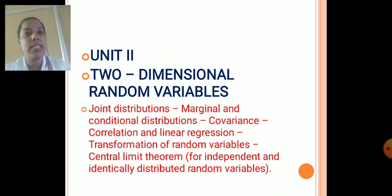In Unit 2, we are going to learn about two-dimensional random variables. In this two-dimensional random variable, they too have subtopics. They were all joint distributions, marginal and conditional distributions, covariance, correlation and linear regression, transformation of random variables, and then central limit theorem.